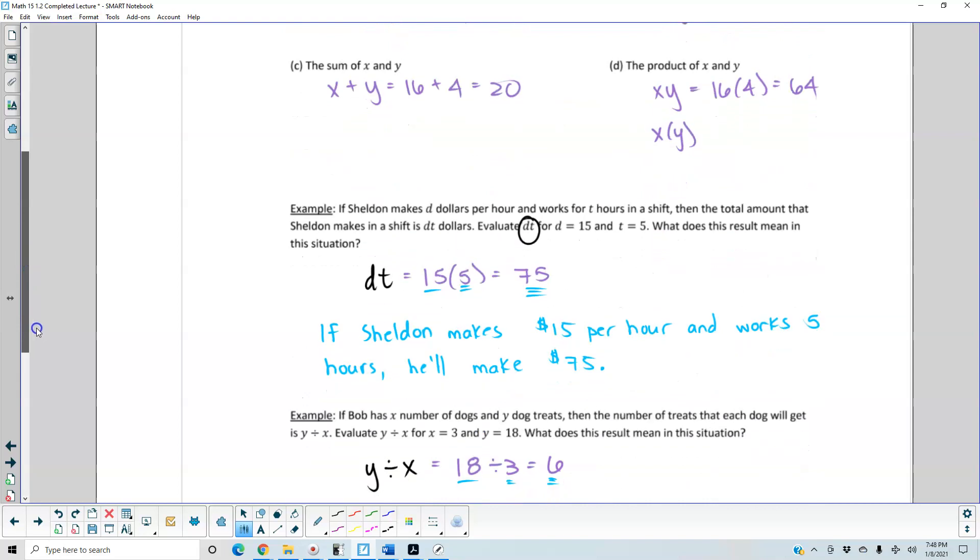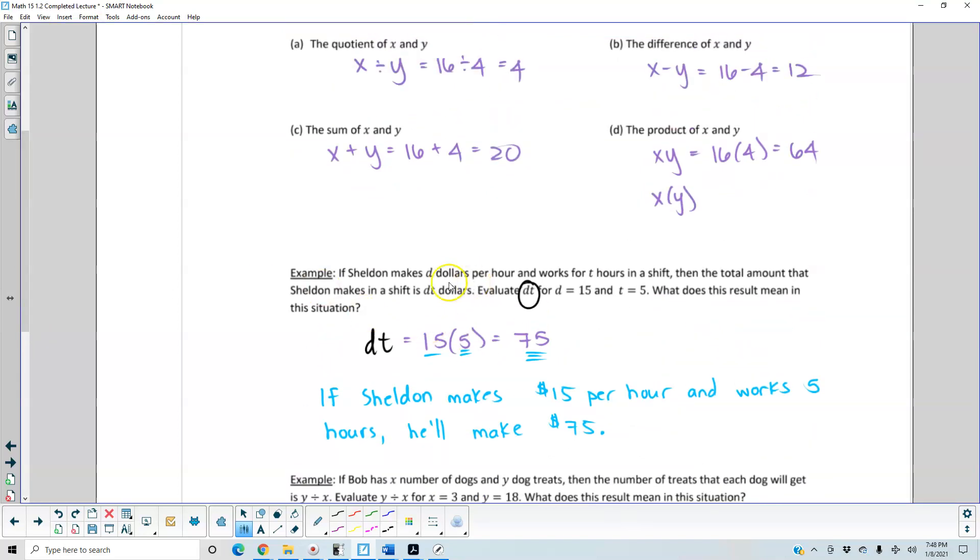Another example. If Sheldon makes d dollars per hour and works for t hours in a shift, then the total amount that Sheldon makes in a shift is d times t dollars. Evaluate dt for d equals 15 and t equals 5. And then, what does this result mean in this situation?